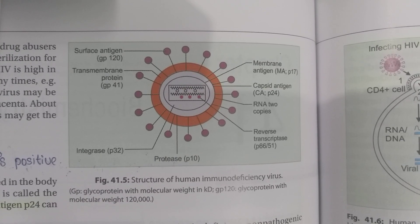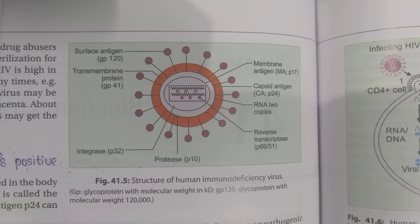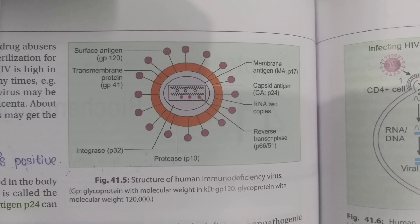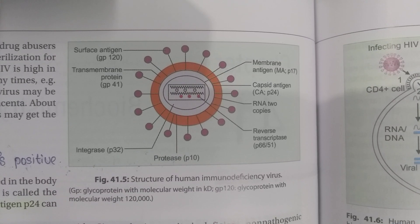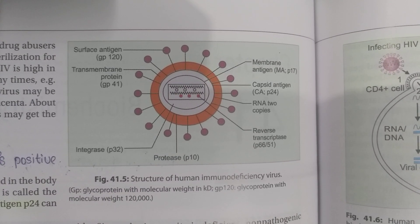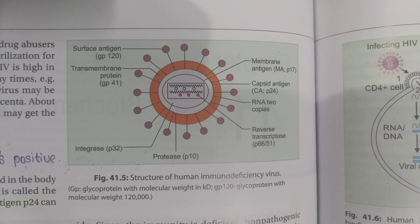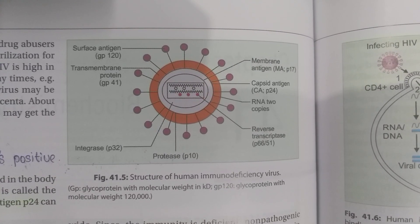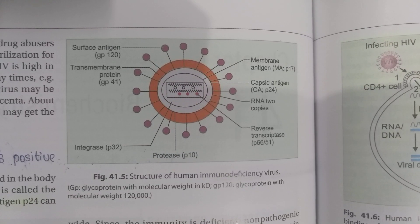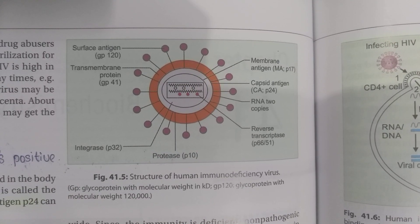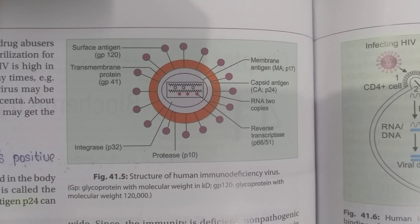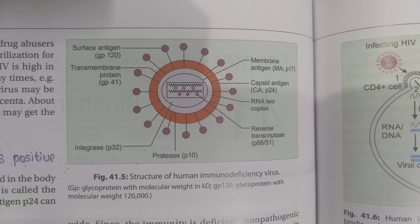The viral core is surrounded by the major capsid antigen p24, which has clinical significance: during the window period of HIV infection, p24 can be detected using the p24 antigen assay, whereas the ELISA test shows negative during this period.